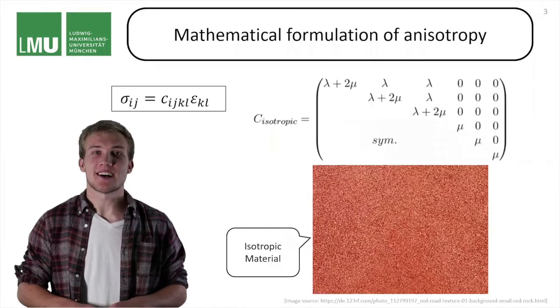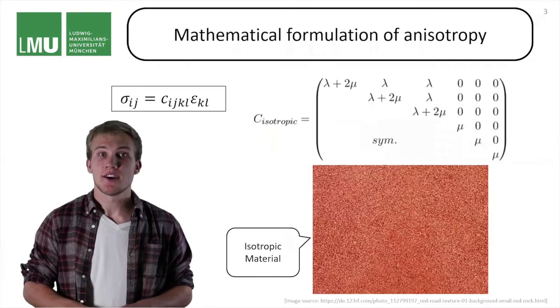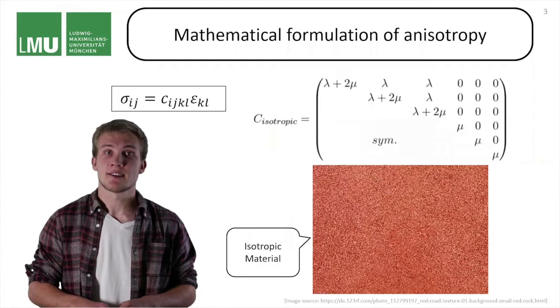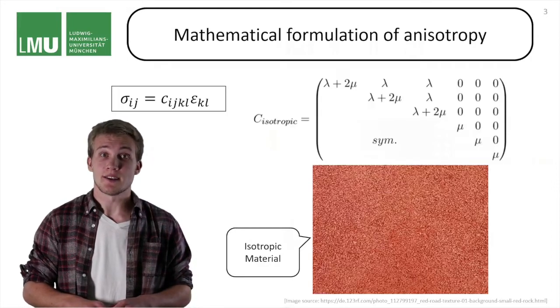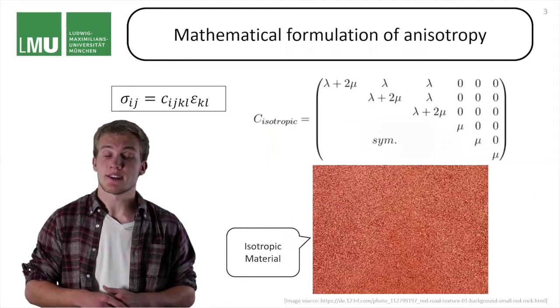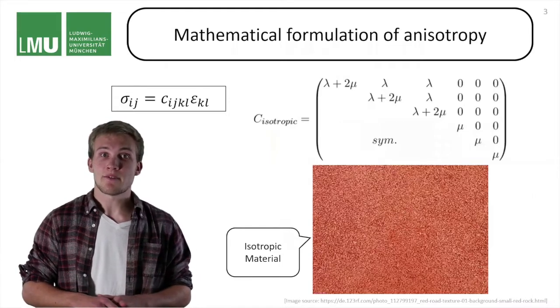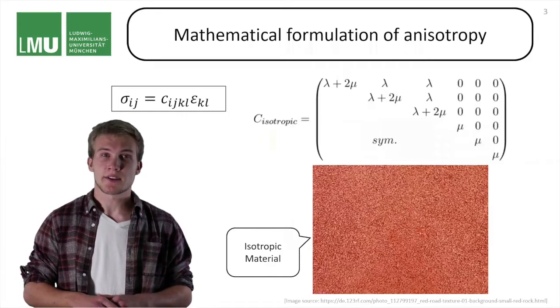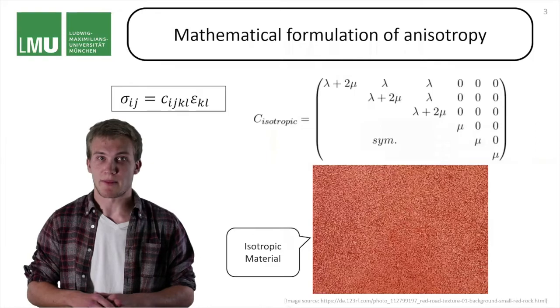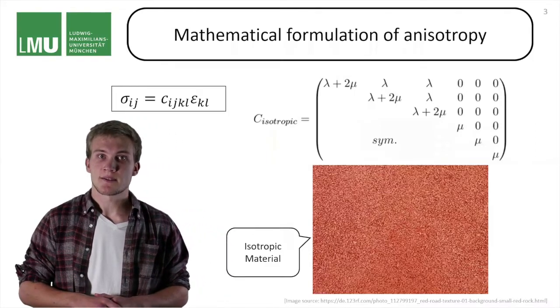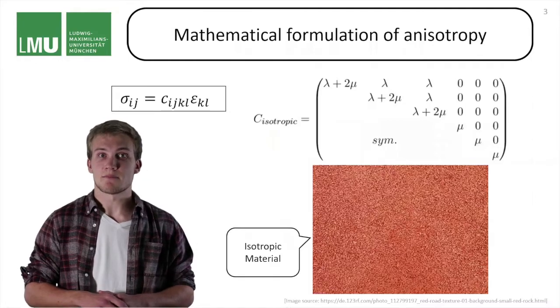Let's have a look at how anisotropy is formulated mathematically. You may recognize this equation here as Hooke's law, which connects stress and strain in a linear way. This linearity is formulated through the elastic tensor. It can have a maximum amount of 21 independent parameters which you can conveniently assemble in this six-by-six matrix. Here is a simple example for the isotropic case where you just have two independent parameters.